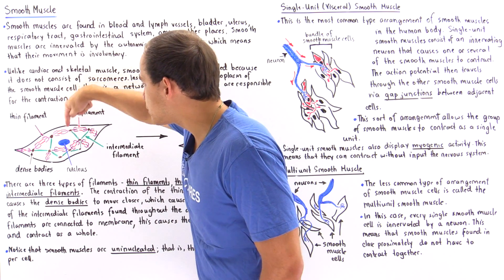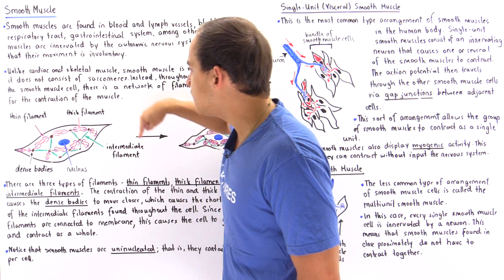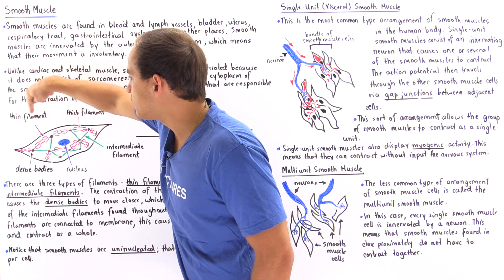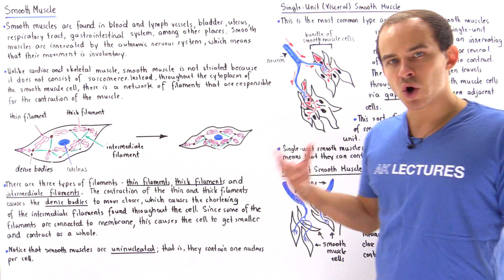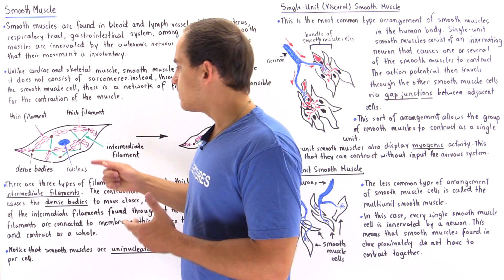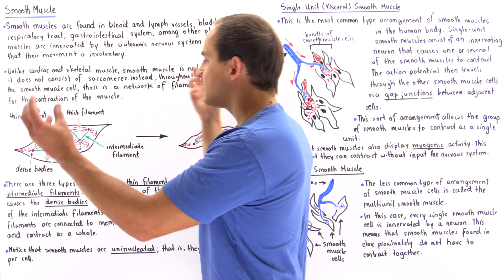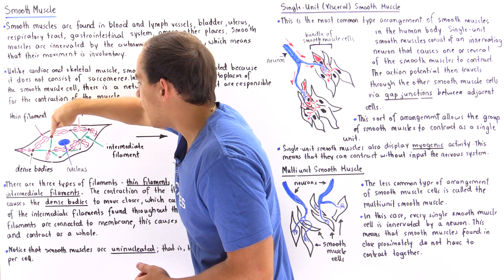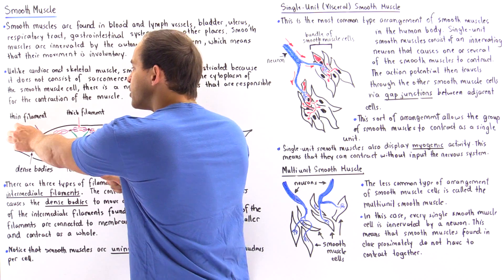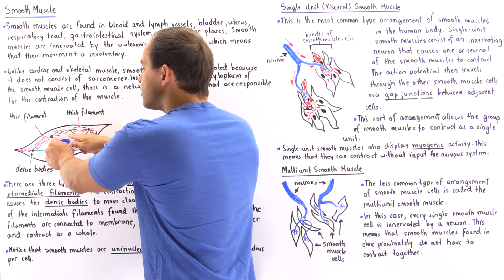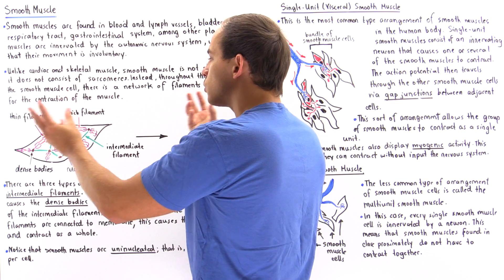We also have regions called dense bodies, shown as brown dots. The green portions are intermediate filaments, the red portions are thick filaments, and the purple portions are thin filaments. Dense bodies are composed of a protein known as alpha actinin. The contraction of the thin and thick filaments causes these dense bodies to move closer together, and they are connected to one another via the intermediate filaments.